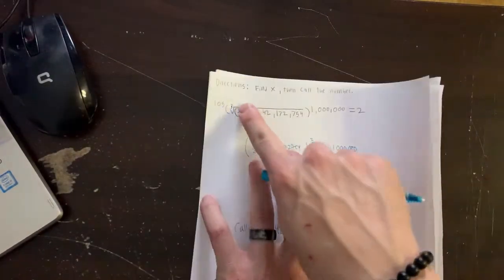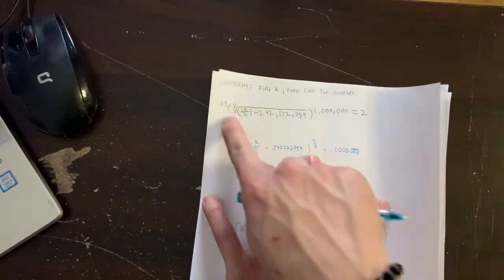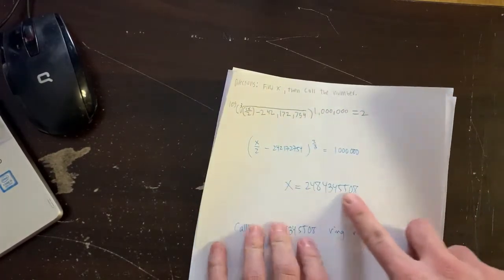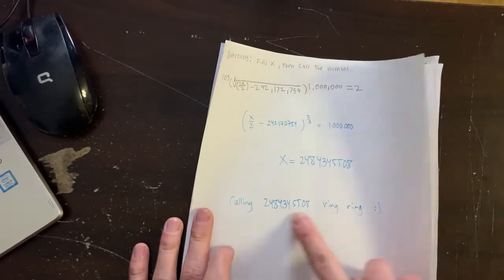Let's see this one here. So it says find X, then call the number. So I solved this equation for X. X is a crazy number. And then I just called the number ring, ring.